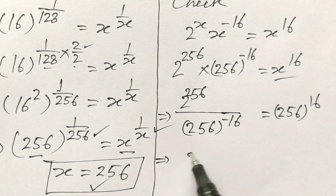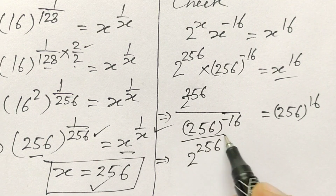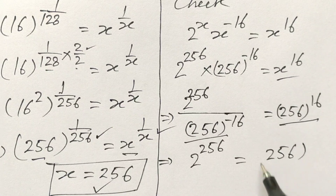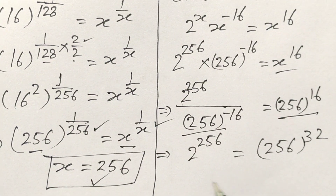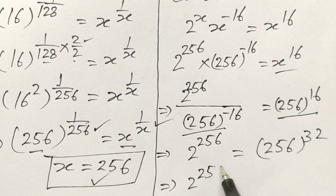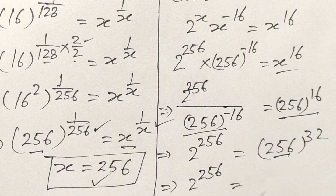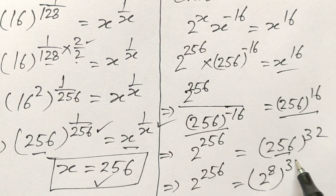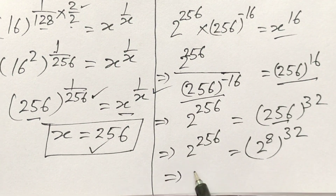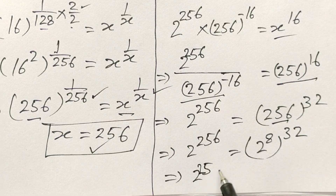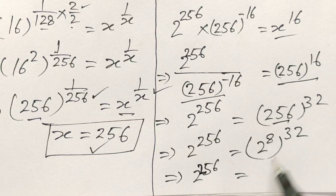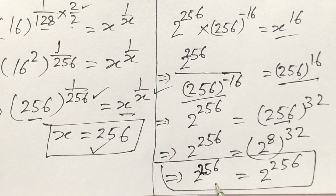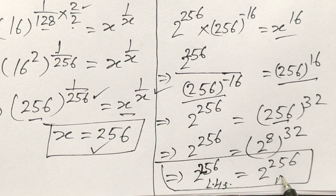So 2 to the power 256 equals 256 to the power 32. Now 256 is 2 to the power 8, so 256 to the power 32 is 2 to the power 8 into 32, which is 2 to the power 256. Therefore 2 to the power 256 equals 2 to the power 256 — left hand side is equal to right hand side.